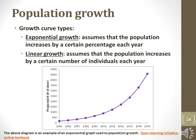Growth of populations over time may be recorded. Exponential growth assumes a population increases by a particular percentage each year; thus, the more individuals present, the more individuals born. Linear growth occurs when a population increases by a fixed number each year regardless of population size.